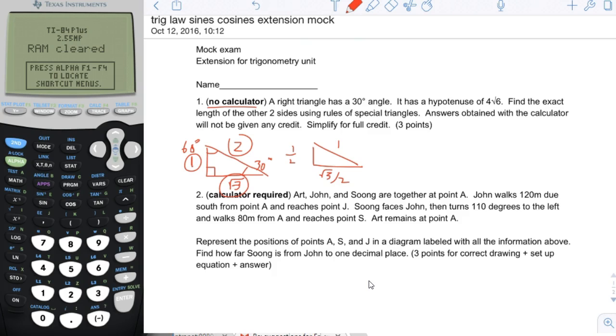Find the exact length of the other two sides using the special triangle. They tell us that in this case, the hypotenuse happens to be 4 square root of 6. So this is basically a proportion problem, but it means that you have to be able to simplify radicals well.